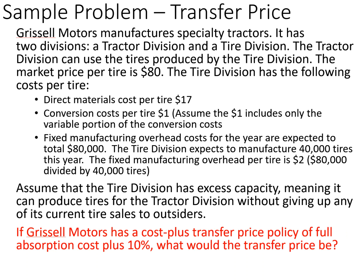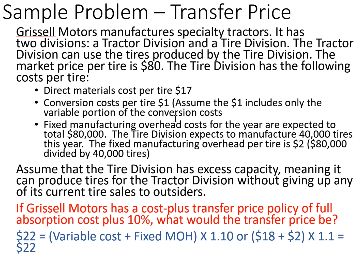Now, if Grazile Motors has a cost-plus transfer price policy — full absorption costing plus 10% — what would the transfer price be? Under absorption costing, all product costs are included: both variable and fixed costs. So we take the $17 direct materials cost plus the $1 conversion cost ($18 variable), plus $2 of fixed costs, giving us $20. Multiplying by 1.1 (cost plus 10%), we get a transfer price of $22.